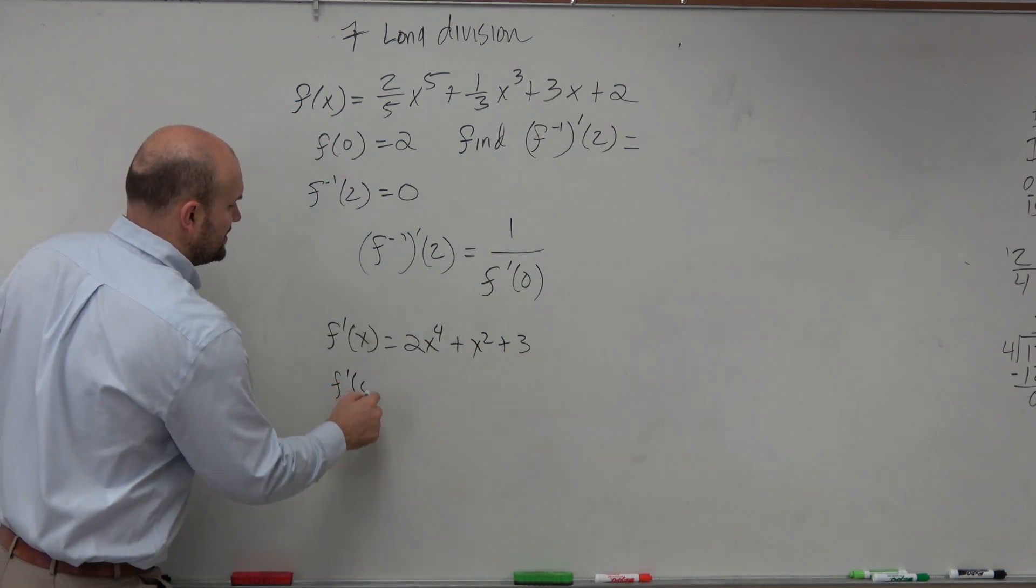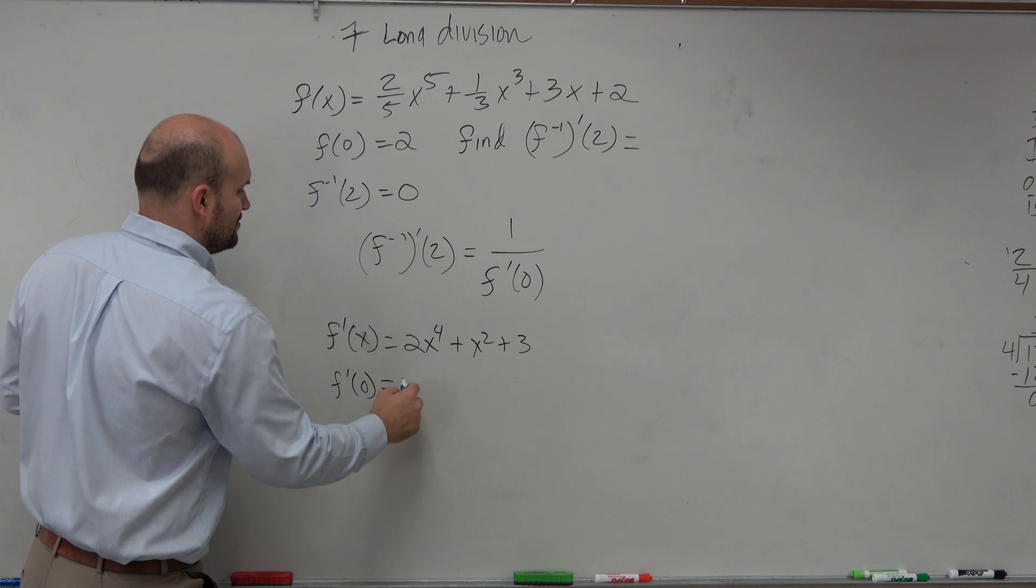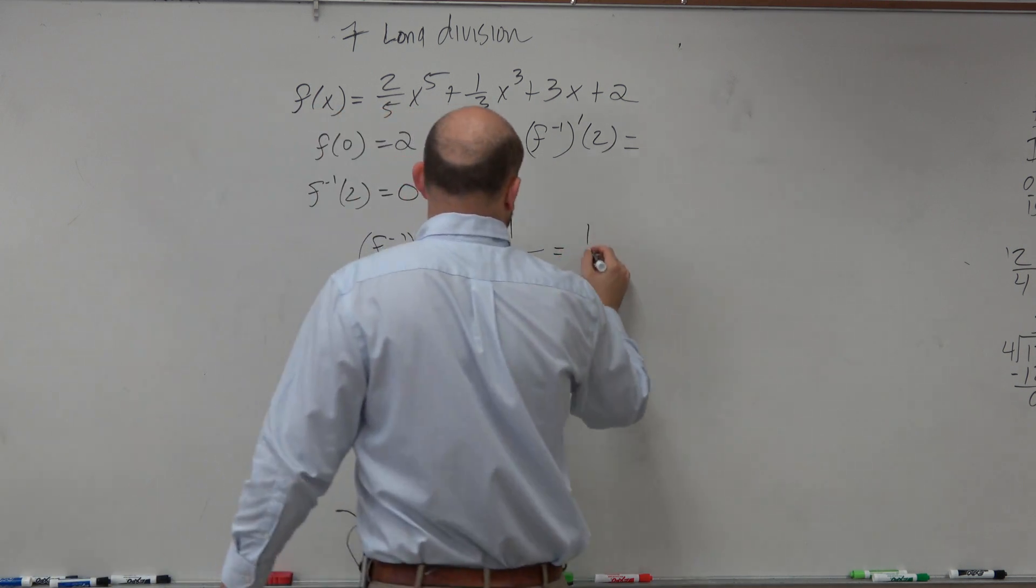So then f prime of 0, 0, 0 equals 3. So therefore, that's 1 over 3.